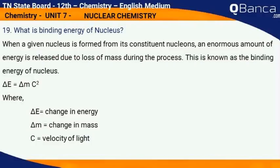Whereas delta E is change in energy, delta M is change in mass, and C is the velocity of light.